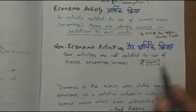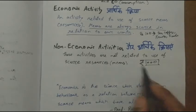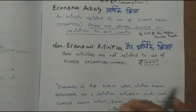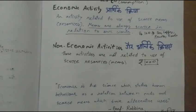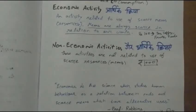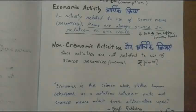In the same manner, if any person gives alms to the poor for social service, that will not be counted as an economic activity — it will be a non-economic activity. Because there is only a one-sided payment — one side gives and there is no exchange in return. This is done out of social service.